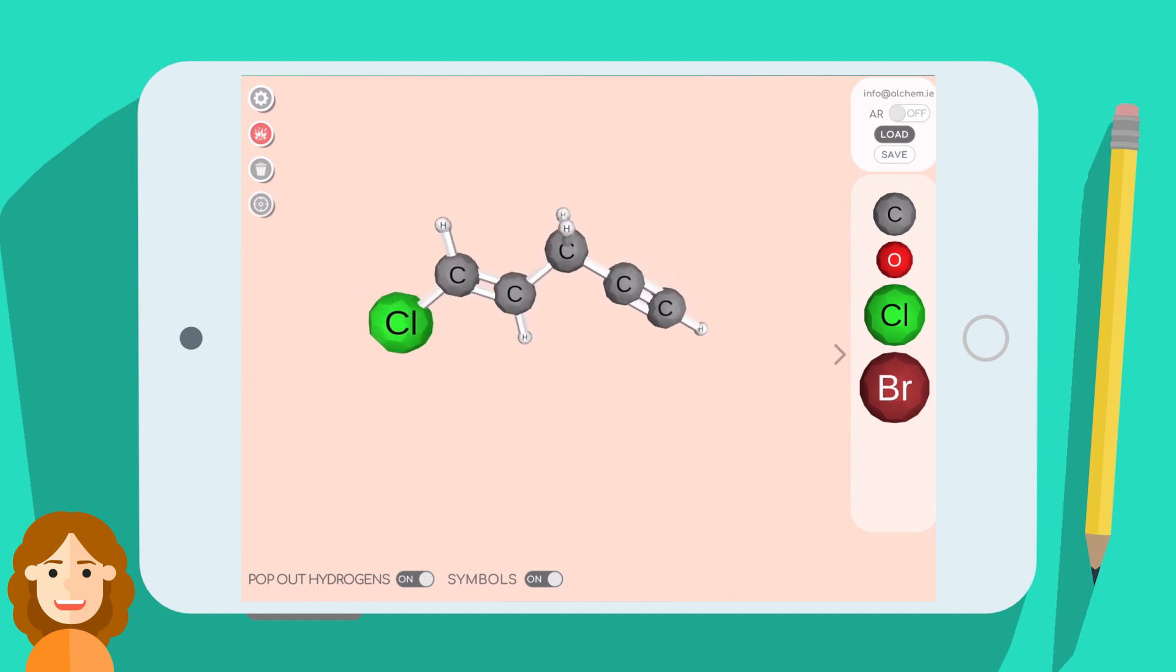If you would like to delete a double or triple bond, just select it, then hit the delete button. You can do the same with terminal atoms as well.